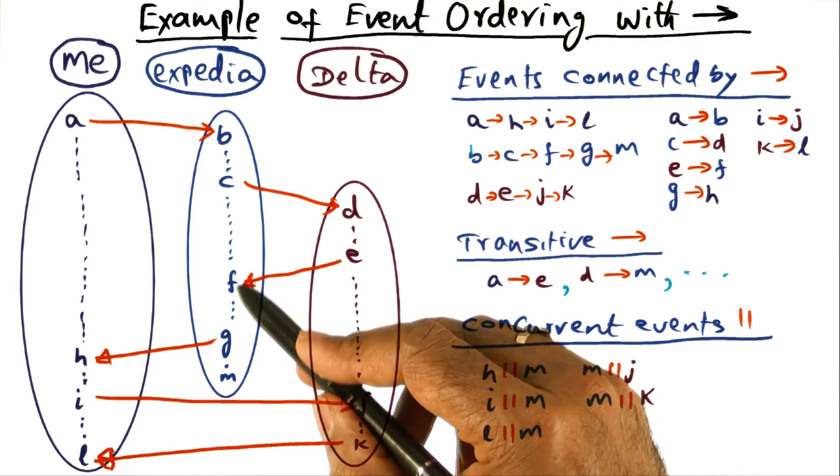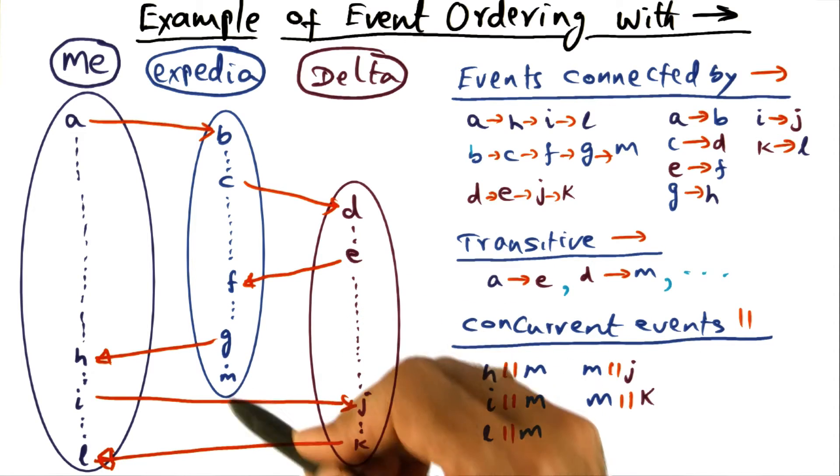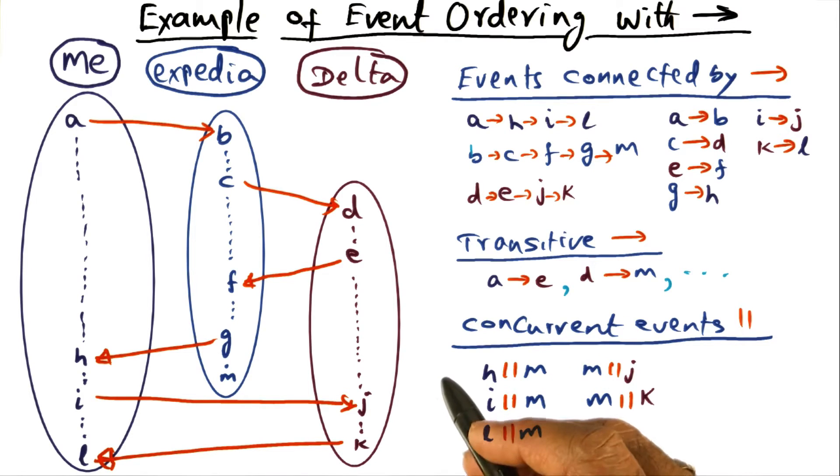but through the transitivity of events that are happening sequentially and through the communication and sequentiality of the process, we know that D must have happened before M. So those are transitive events.